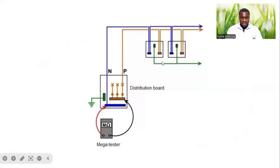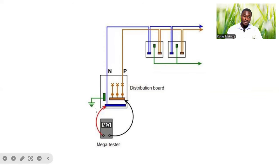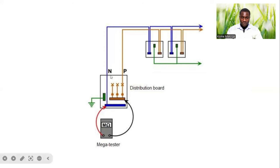We move to this picture where we have two circuit outlets that have been installed and then we have our distribution board. In this case, we will be performing the Insulation Resistance Test using the Mega Tester by testing between the phase and the neutral from the DB side, to ensure that we will not have any interconnection between the phase and the neutral conductor.